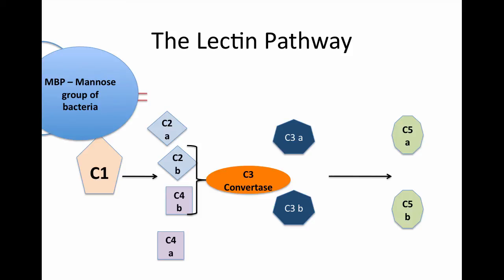The lectin pathway does not include C1. In fact, only the classical pathway includes C1. So it starts directly by C2 and C4.